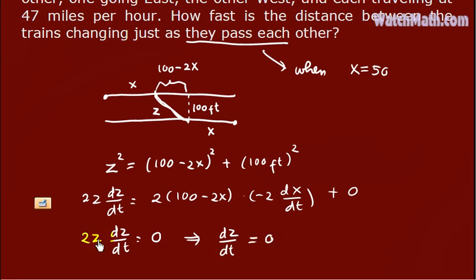Without needing to know what is this z. Actually, this z is equal to the distance between the two tracks. But we don't really need it, because zero divided by 2z is equal to zero. So the distance between the trains is changing at the speed zero miles per hour when they pass each other.